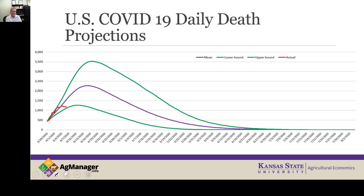If you look at the U.S. daily numbers, the Worldometer numbers do not come in until the evening when all states finally report, so this is only through April 6th and I don't have the April 7th numbers here. You can see the pattern in terms of how it's tracked with regards to the original projections — the original probability density function, or the original path of daily deaths.